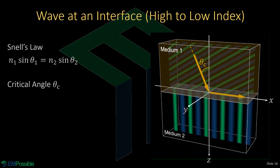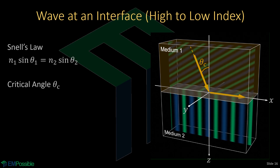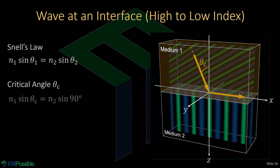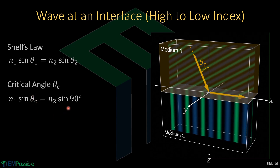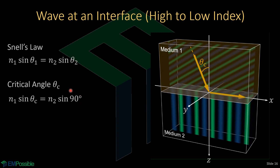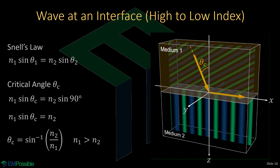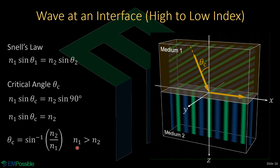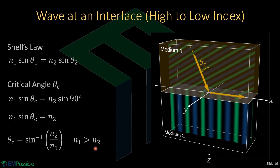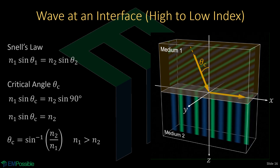We still need to answer what happens when the angle of incidence is greater than the critical angle, but let's first derive an equation for the critical angle. Using Snell's law with the angle of incidence as theta sub c and the angle of transmission as 90 degrees, the sine of 90 degrees is just one, so we can drop that term. Solving what remains gives us the critical angle equation from the refractive indices of the two mediums. The only requirement is that the refractive index of medium one is greater than that of medium two — otherwise there is no critical angle. The wave must travel from the high refractive index medium to the low refractive index medium to have a critical angle.